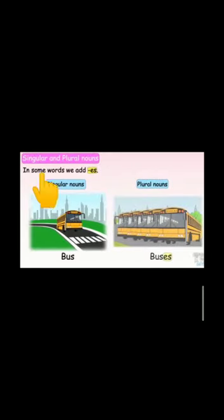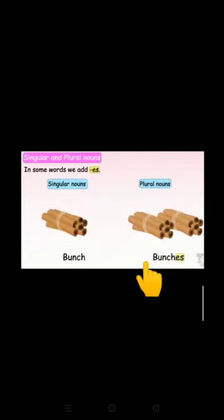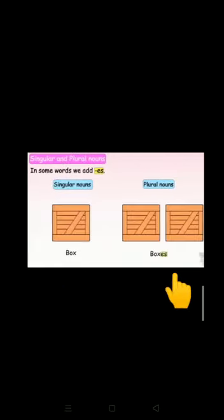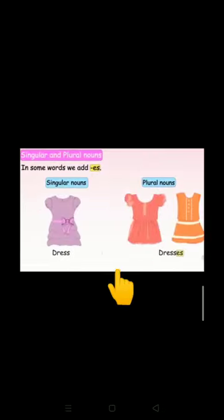In some words, we add es. Most of the words we use S, but in some we use es. For example, bus, buses. Bunch, bunches. Ostrich, ostriches. Box, boxes. Dress, dresses.